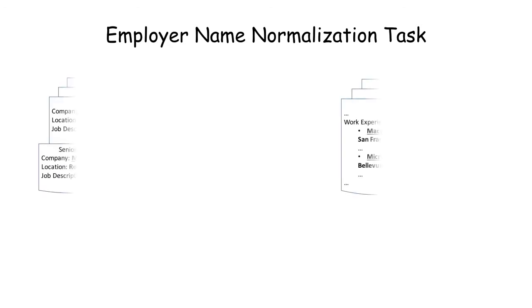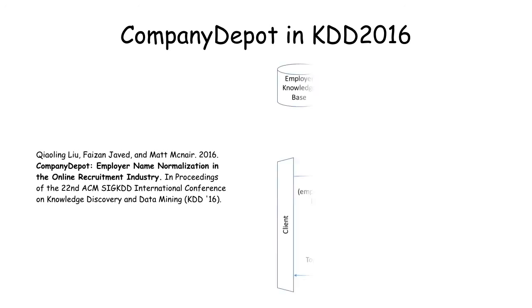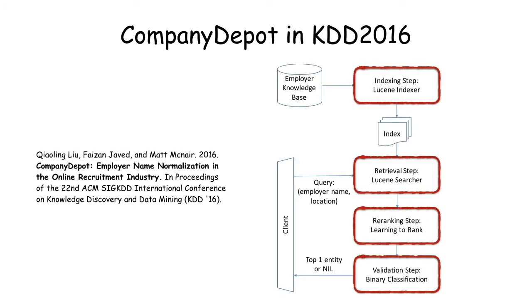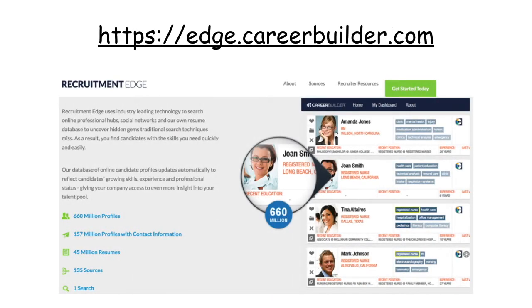In the recruitment industry, the employer name normalization task, which links employer names in job postings or resumes to entities in an employer knowledge base, is important to many business applications. In our previous paper at KDD 2016, we proposed a company depot system, which used machine learning techniques to address the problem.